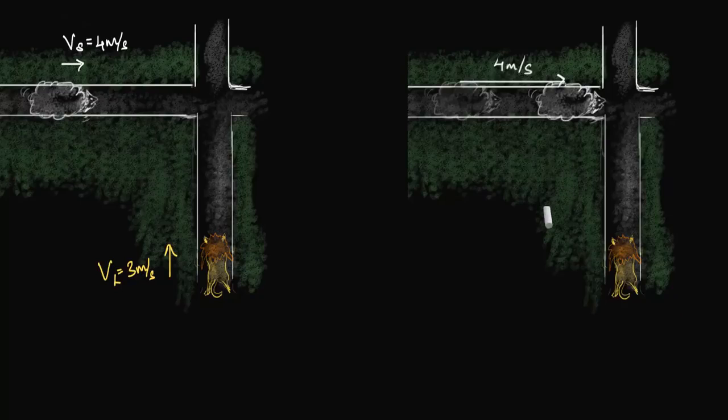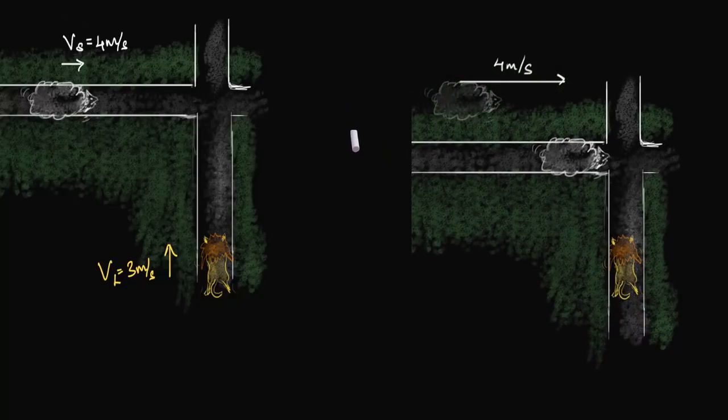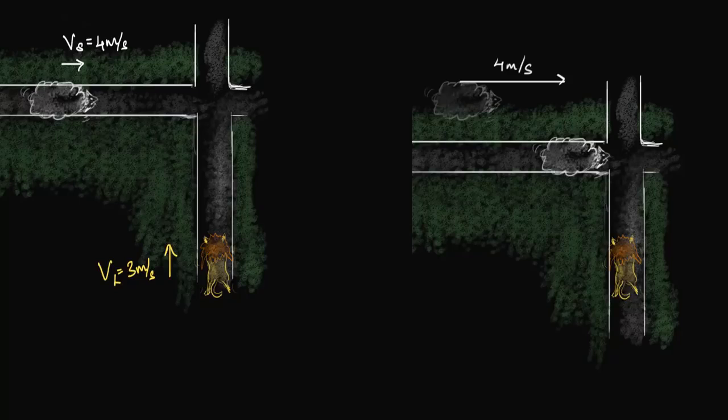But in that one second, you would also see that the road and the sheep would have gone downwards three meters. So let's put that in as well. So the road and the whole ground goes three meters in one second.